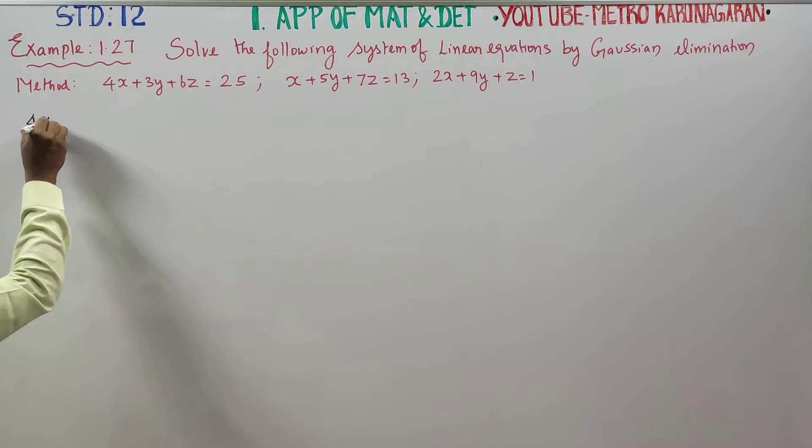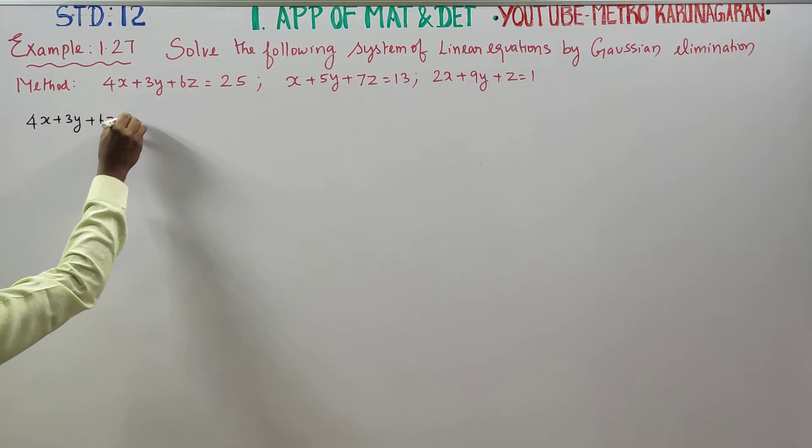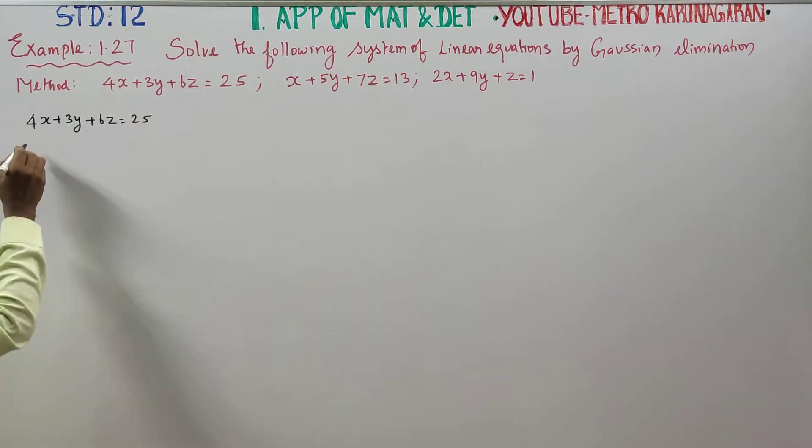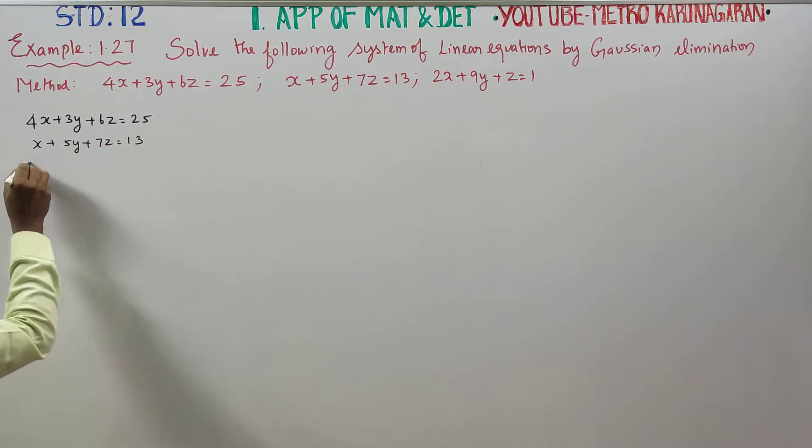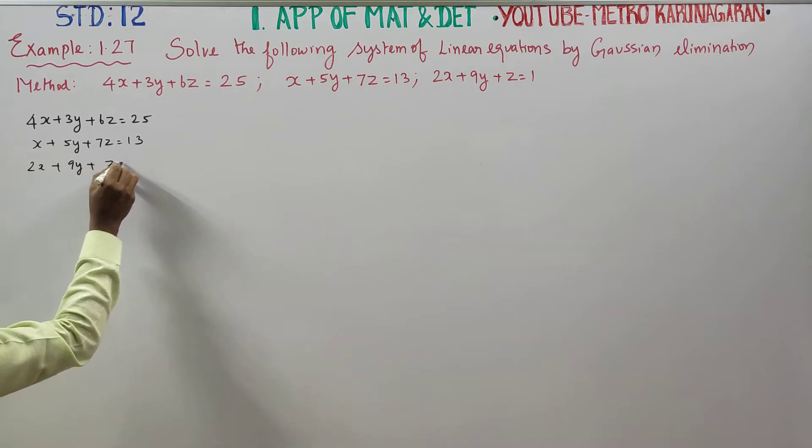First, we will see the equations. 4x plus 3y plus 6z is equal to 25. x plus 5y plus 7z is equal to 13. 2x plus 9y plus z is equal to 1.